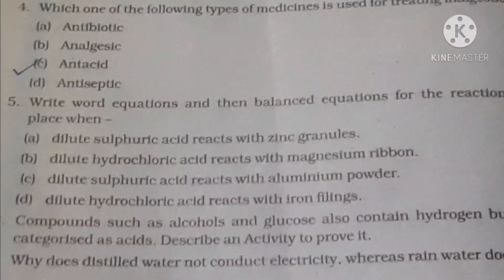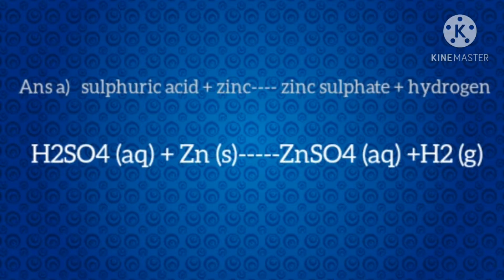Question number 5: Write word equations and balanced equations for reactions when: A — dilute sulfuric acid reacts with zinc granules; B — dilute hydrochloric acid reacts with magnesium ribbon; C — dilute sulfuric acid reacts with aluminum powder; D — dilute hydrochloric acid reacts with iron filings. Answer A: Sulfuric acid + Zinc → Zinc sulfate + Hydrogen. H₂SO₄ (aq) + Zn (s) → ZnSO₄ (aq) + H₂ (g).